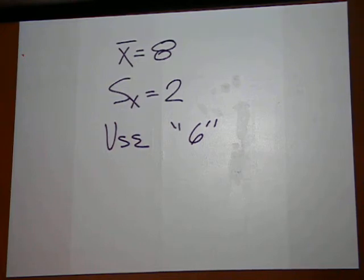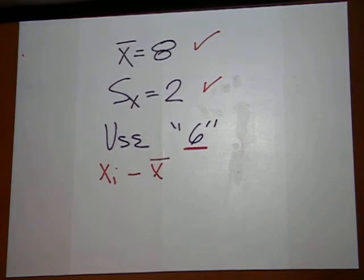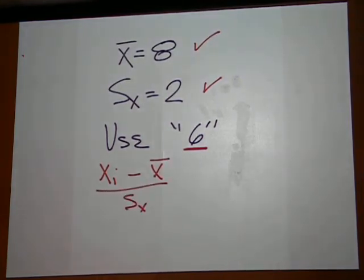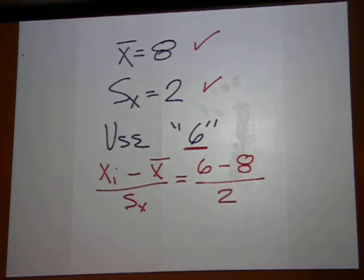We want to find a z-score for the number six from the list that gave us an average of eight and a standard deviation of two. The formula is the item minus the mean over the standard deviation, which in this case will be six, the item, minus eight, the mean, divided by the standard deviation, which is two.